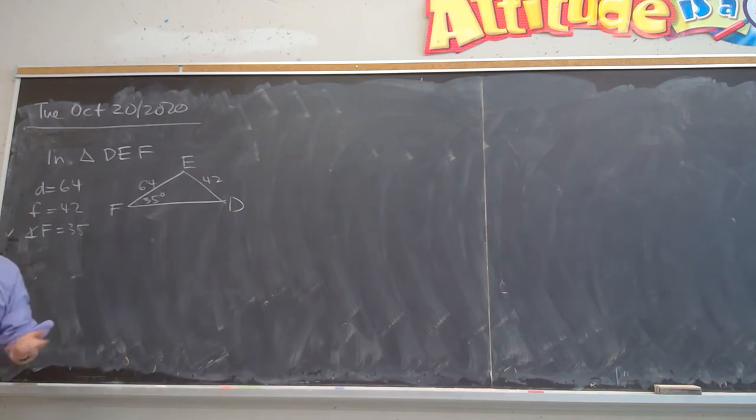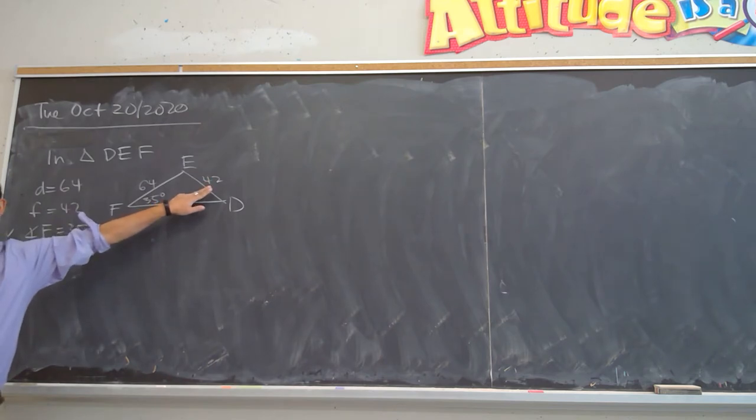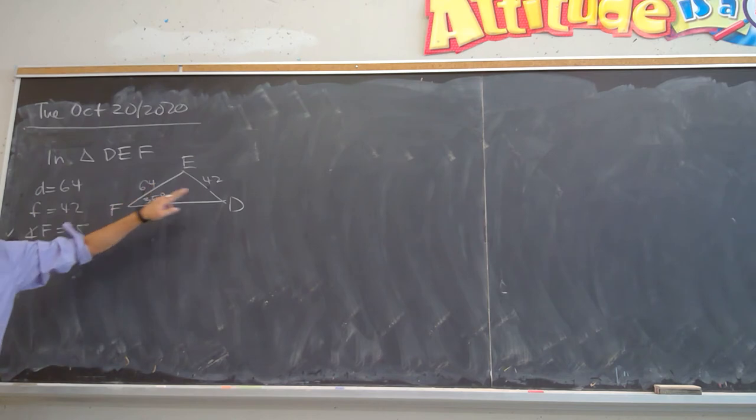Because, just like when we talked about it in our cases of ambiguous case, this side F is smaller than this side D. You see that? And since this side is smaller than this, I will check against the height of this triangle.